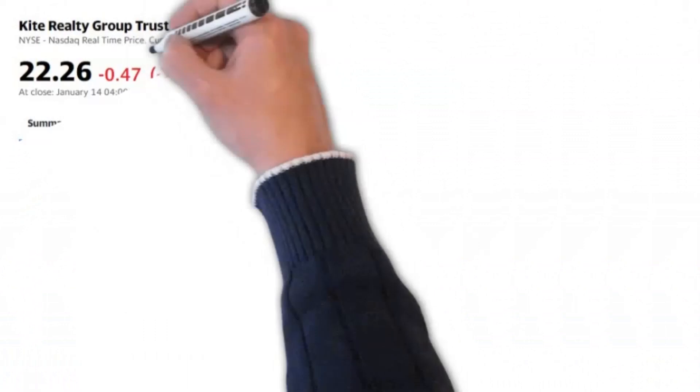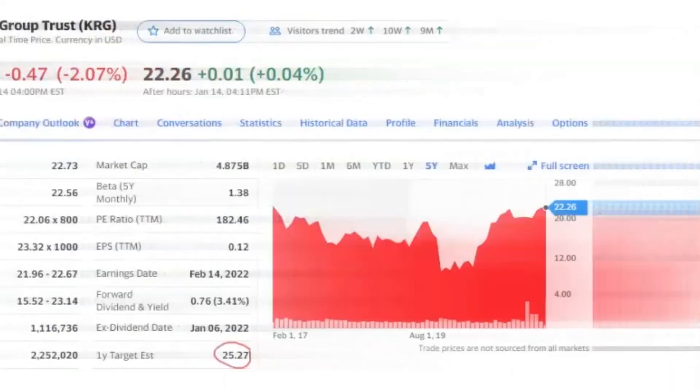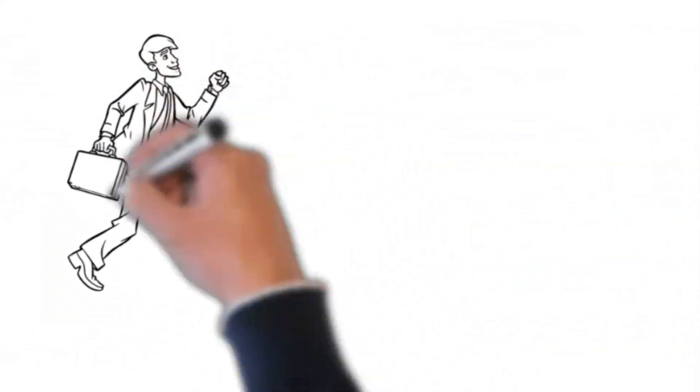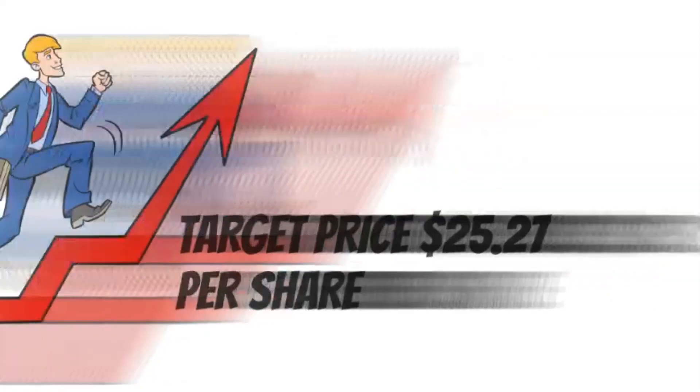On January 14, 2022, Kite Realty Group Trust had a closing price of $22.26 per share, target price $25.27 per share, potential capital gains $3.01 per share.